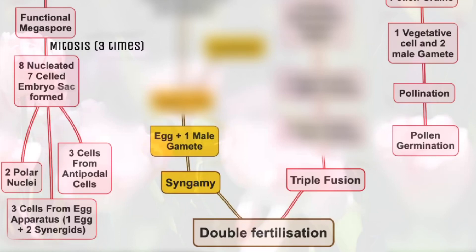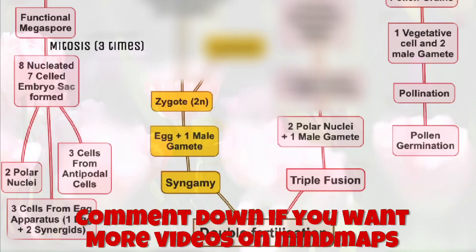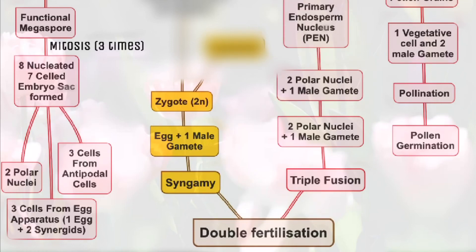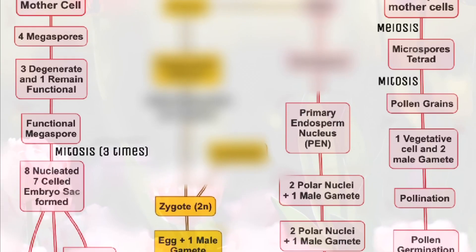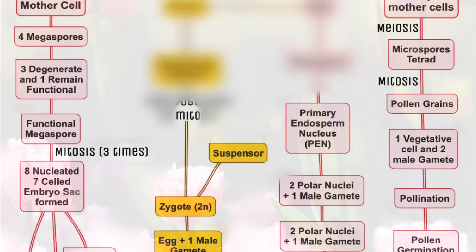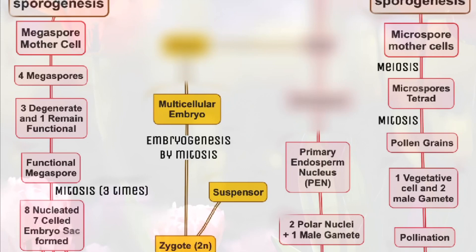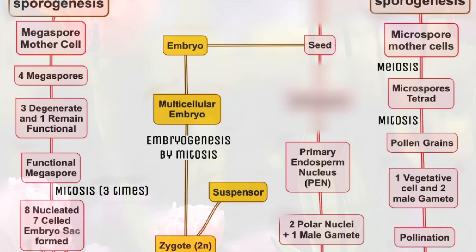Syngamy: egg + one male gamete = zygote, which is diploid in nature. In triple fusion, the other male gamete moves towards the two polar nuclei located in the central cell and fuses with them to produce the triploid primary endosperm nucleus (PEN). The zygote further divides into suspensor and undergoes embryogenesis by mitosis, resulting in a multicellular embryo, which further develops into a seed. From PEN, endosperm forms and also develops into seed.